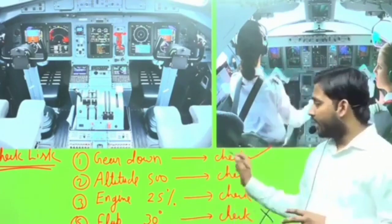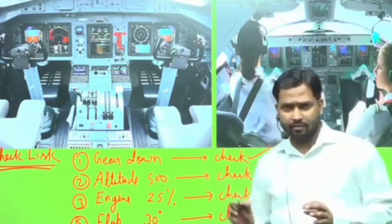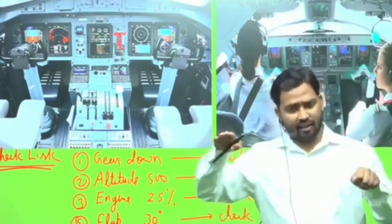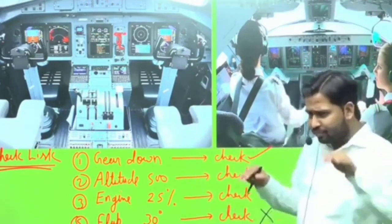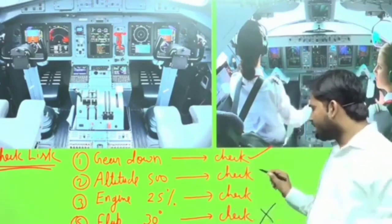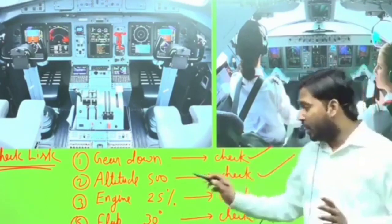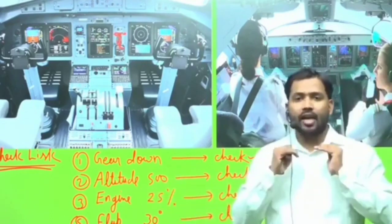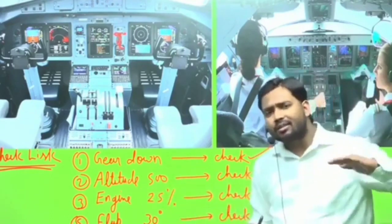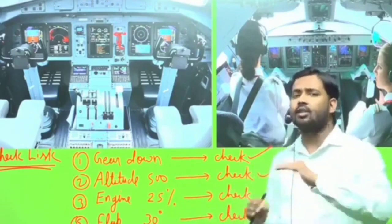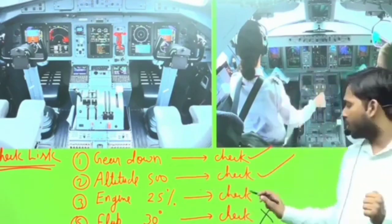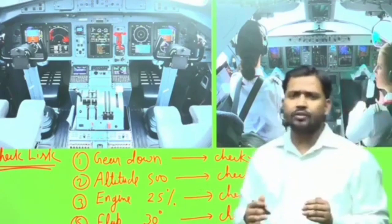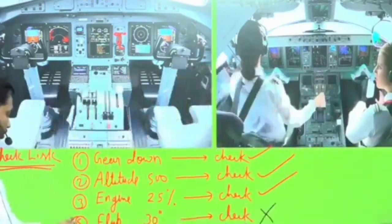At an altitude of 500 feet, the captain called out that they had passed the 500-foot altitude point. The first officer said 'check,' meaning it was confirmed. Another item: engine power is set to 25 percent. When the aircraft lands at the designated point, the ideal engine power setting for landing is 25 percent. So the first officer confirmed 'check' for 25 percent engine power as well.